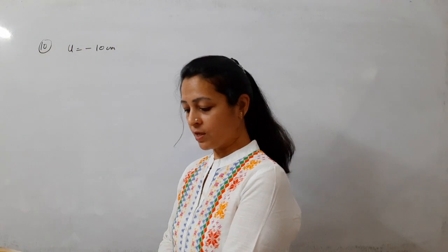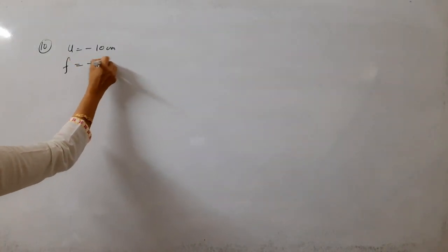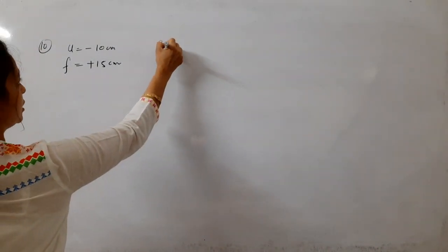From a convex mirror of focal length 15 cm. The convex mirror's focal length 15 cm is given. And since we have a convex mirror, we will find the position and nature of image. You have two things: position and nature.